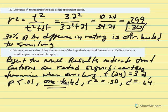Our r squared of approximately 0.30 is considered a high effect. We also calculated d equal to 0.64. Normally we would not report both d and r squared together since it's redundant, but since we calculated both, they're included in our concluding statement.